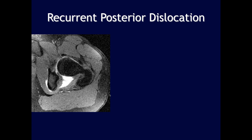In the next case, axial images of the hip show a history of recurrent posterior dislocations. There is diffuse blunting and irregularity of the posterior labrum, compatible with chronic tearing and blunting due to recurrent dislocations.